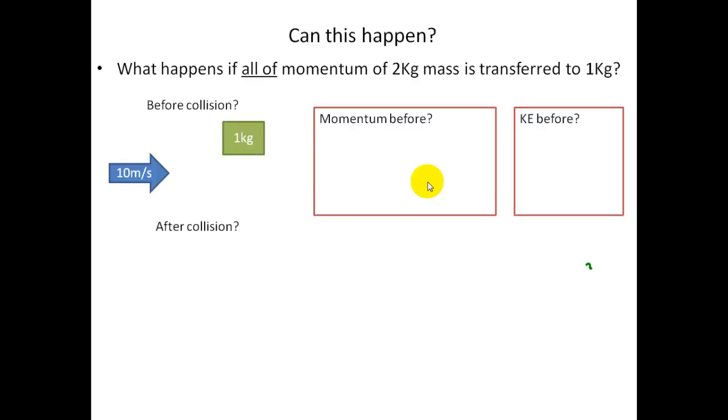So, can this happen? What happens if all of the momentum of 2 kg mass is transferred to 1 kg? So what we have is before the collision we have an object which is coming in and is going to collide with one kilogram. So if this comes in here, 2 kg at 10 meters per second, can all the momentum be transferred to the first one?